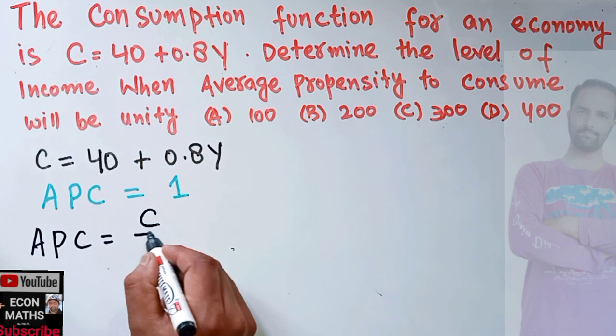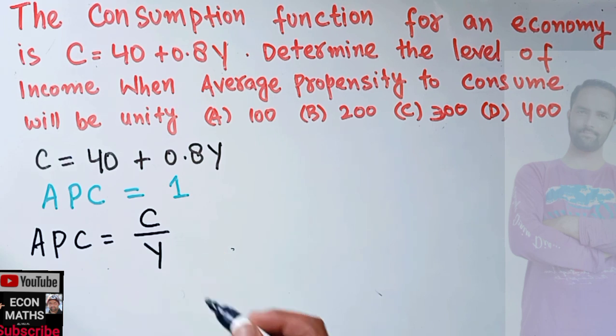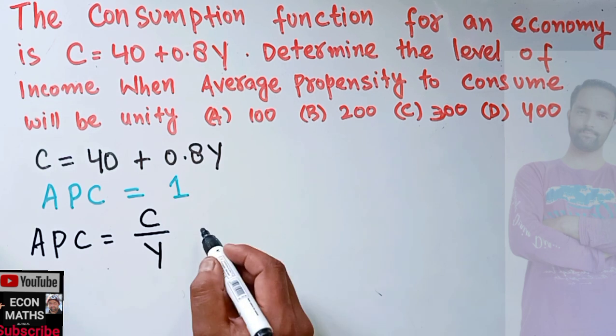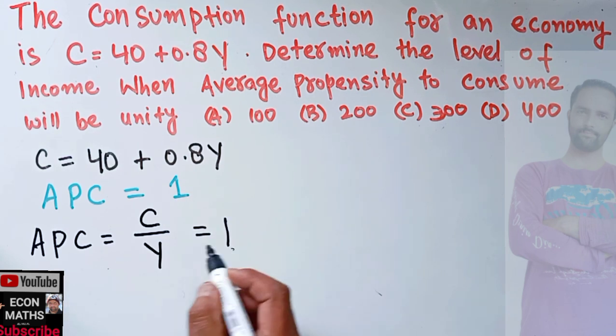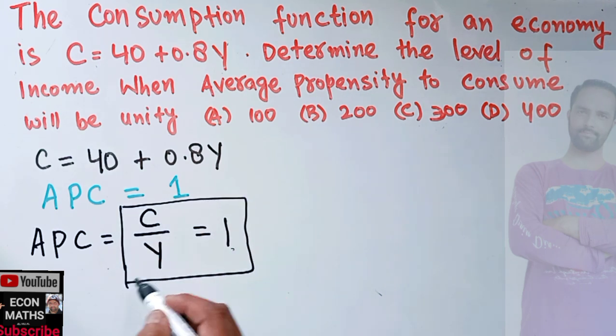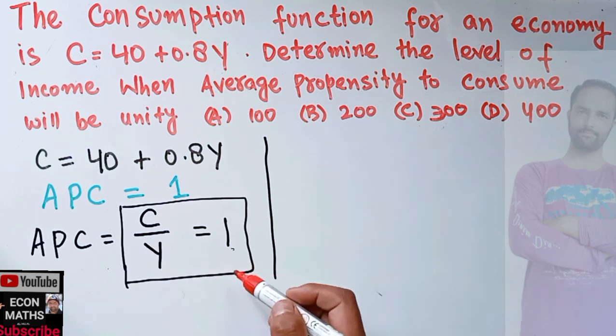Since APC is equal to 1, we can equate it with 1. So C/Y = 1, which implies, cross multiplying here, which implies C will be equal to Y.